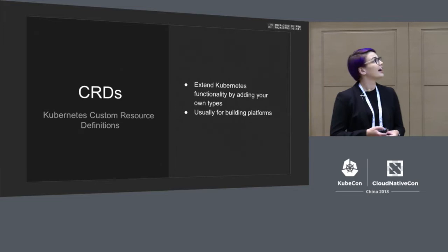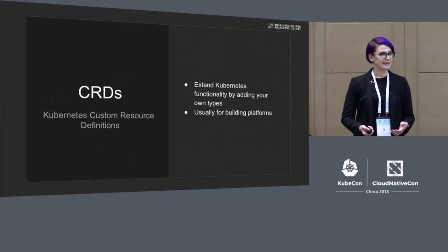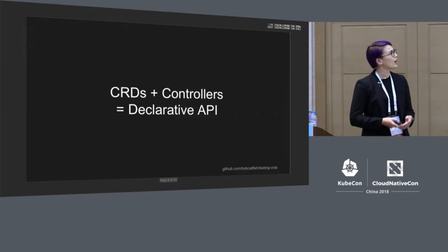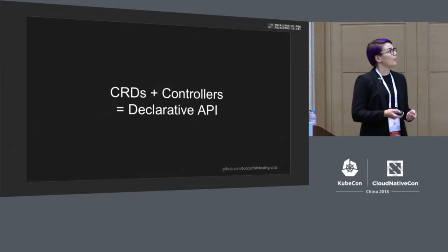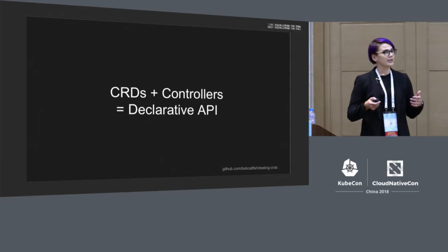CRD stands for Custom Resource Definition. This is something that lets us add our own types to Kubernetes in addition to the built-in ones like deployments and pods. On their own, CRDs just let us create structured data. But we want to operate on that data, so we add controllers, which are binaries that we run, and together we can make declarative APIs.